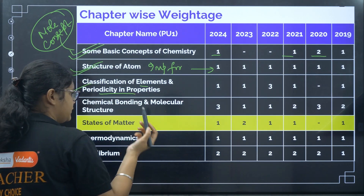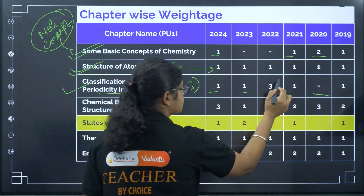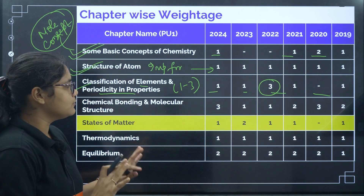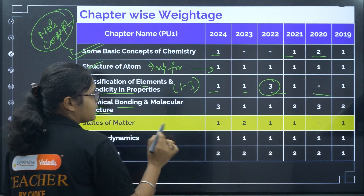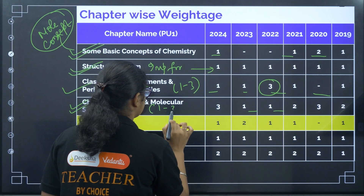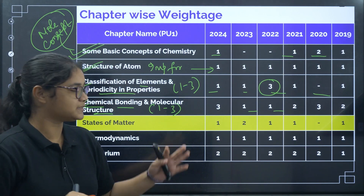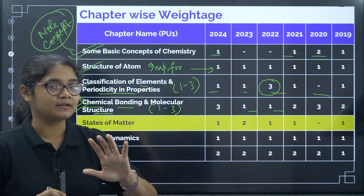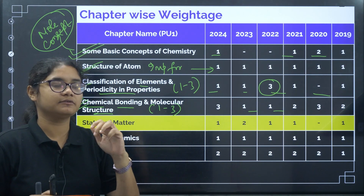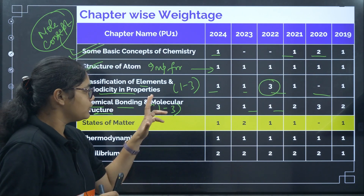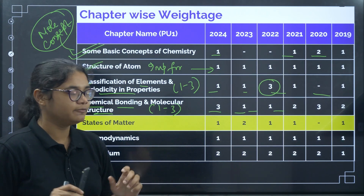Classification of Elements and Periodicity is a very small and easy chapter — almost one question has been asked, with one special year having three questions. Chemical Bonding and Molecular Structure is a very important, high-weightage topic where you can expect one to three questions. It is a big chapter, but the good news is that questions come from certain specific portions every year. If we know those areas, we can revise and still solve all the questions.